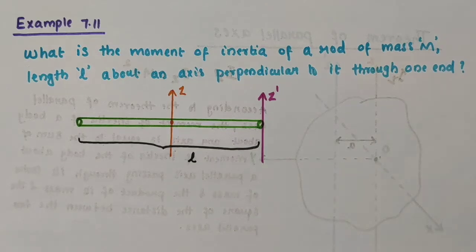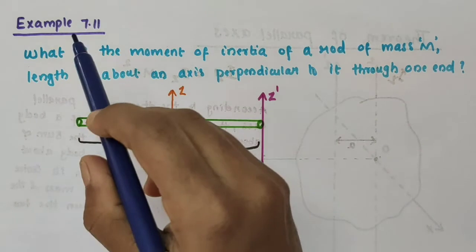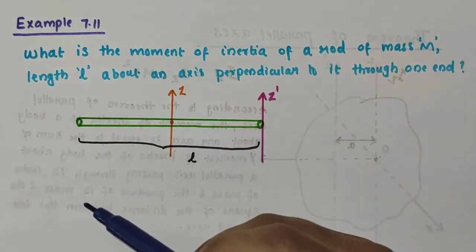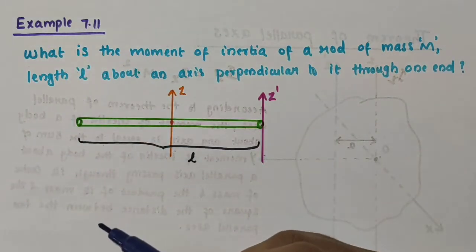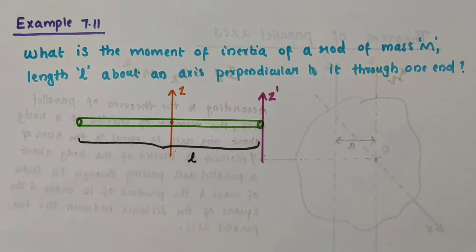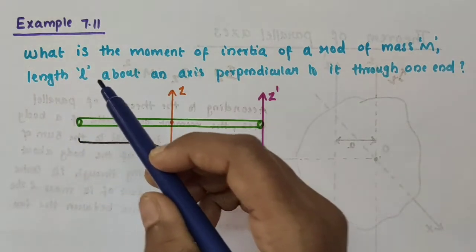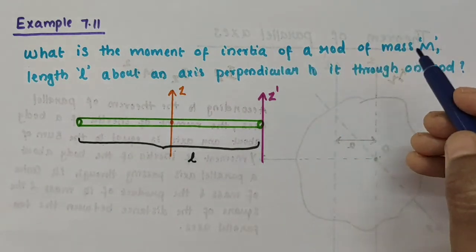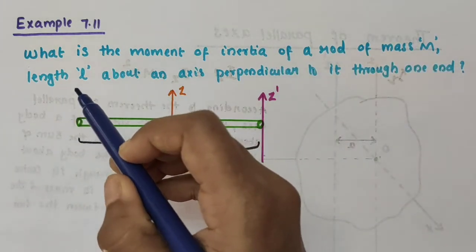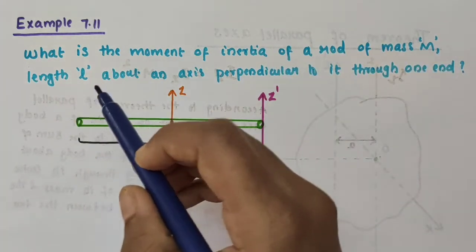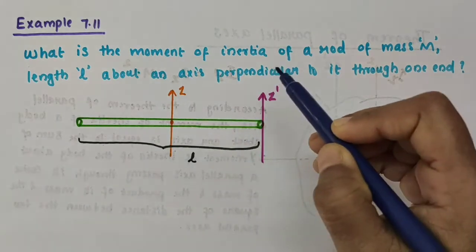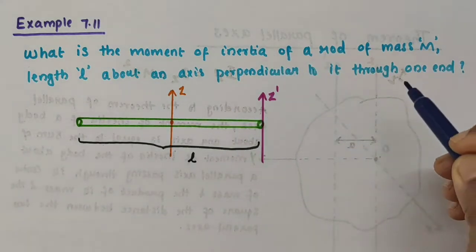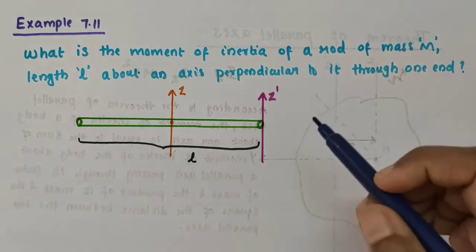Hello everyone, in this video we are going to discuss Example 7.11 from Chapter 7, Systems of Particles and Rotational Motion of Class 11 Physics. The question is: what is the moment of inertia of a rod of mass M and length l about an axis perpendicular to it through one end?